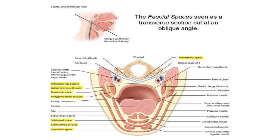Here is a nice diagrammatic representation of all fascial spaces related to the mandible and the pharyngeal area — a transverse section cut at an oblique angle. The spaces are highlighted in yellow: the perimandibular spaces — sublingual, submandibular, and submental — and posteriorly, the spaces around the ramus: the pterygomandibular space medially between the medial pterygoid muscle and the ramus, and the masseteric space laterally between the ramus and the masseter muscle. Both parapharyngeal spaces are shown — the lateral pharyngeal on either side and the retropharyngeal behind the pharynx. Also shown are the prevertebral fascia, alar fascia, the danger or alar space between them, and the prevertebral space anterior to the cervical vertebrae.